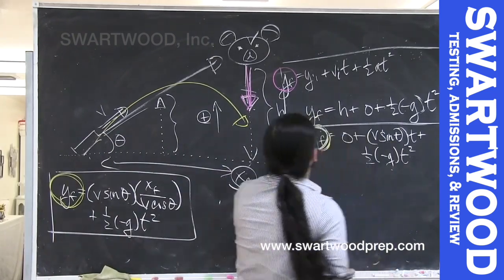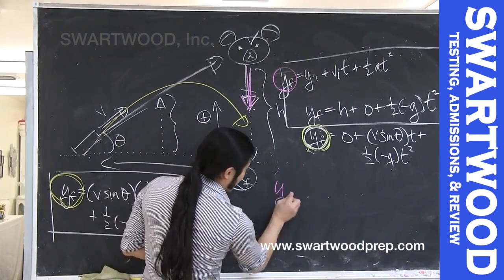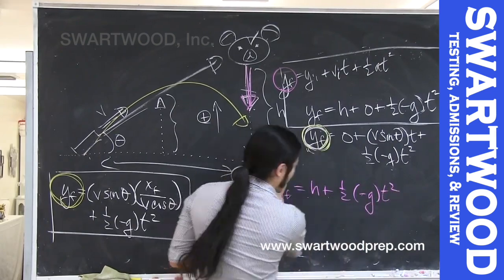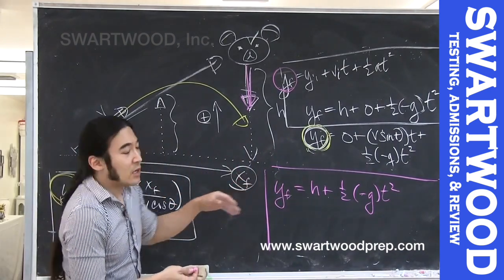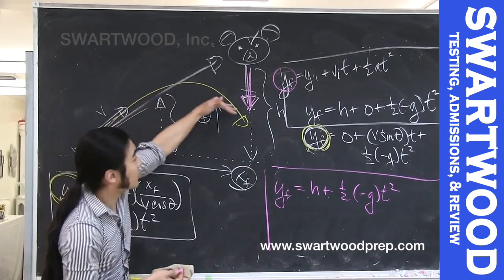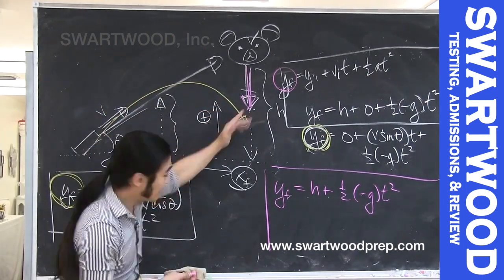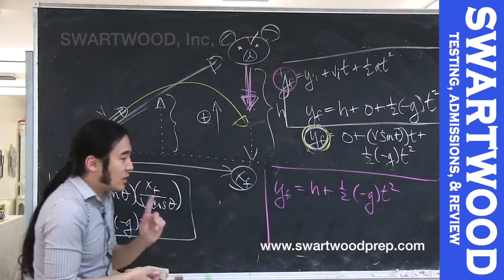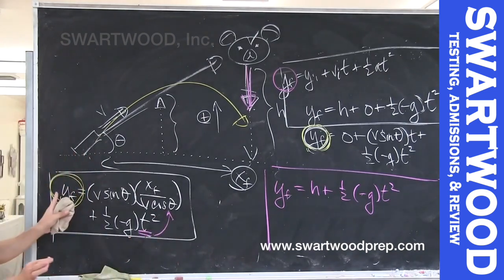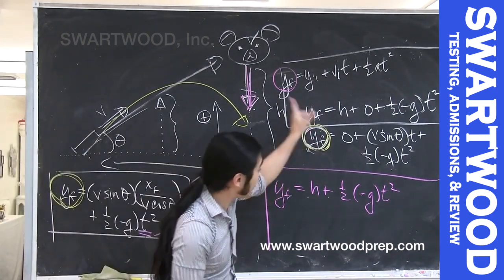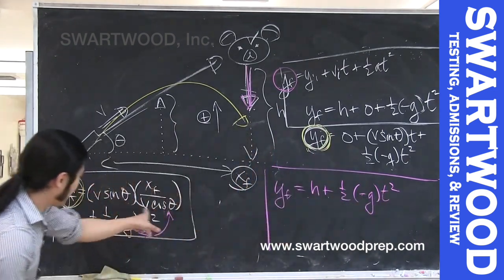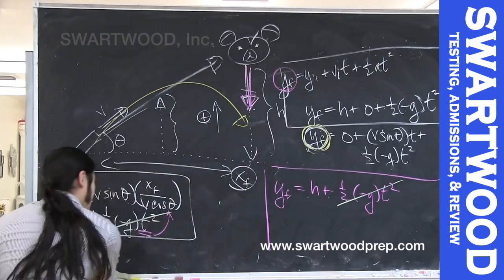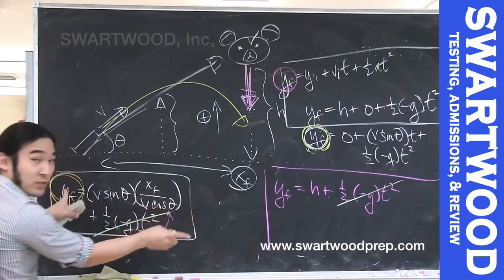Now let's do the same for the bear. For the bear: y_final equals h plus ½·(−g)·t². We already know the magic time — t = x_final / (v·cosθ) — that tells us the bullet's height when it reaches x_final. The only way for the bullet to hit the bear is if the bear's y value at that same time equals the bullet's y value. Comparing the two expressions, the ½·(−g)·t² terms are identical, so we can cancel them. The remaining condition is that the first term must equal h.